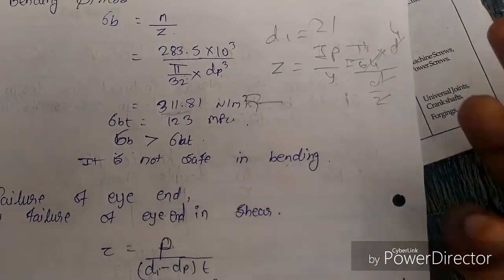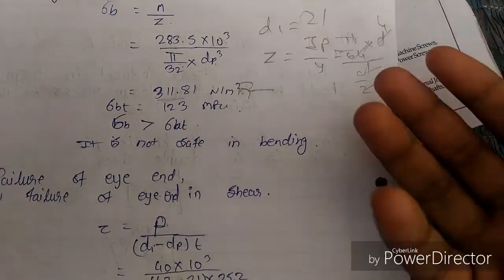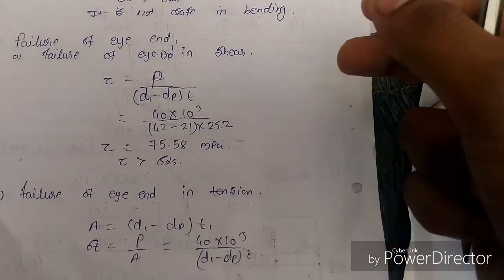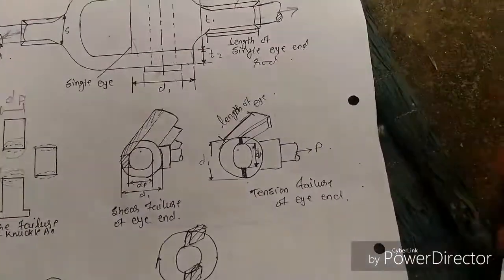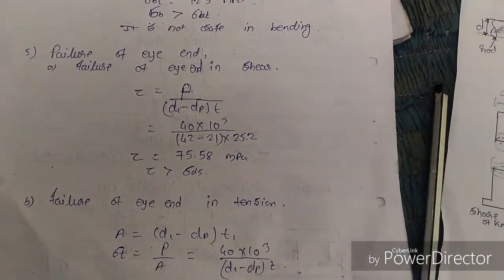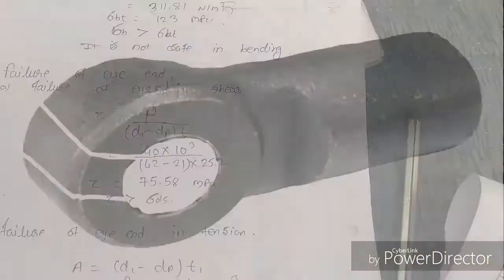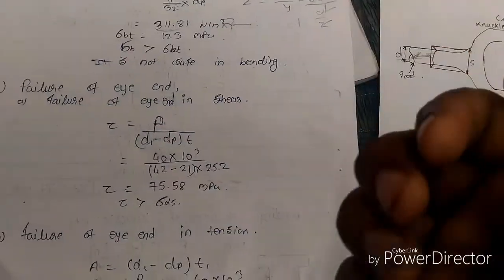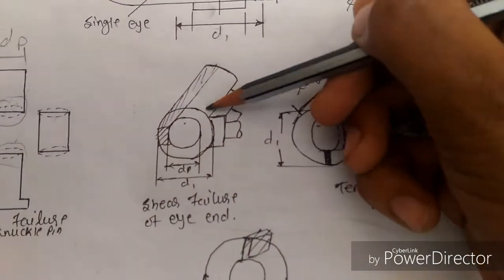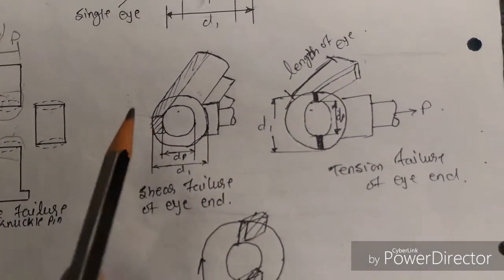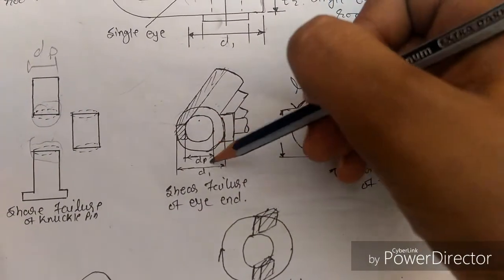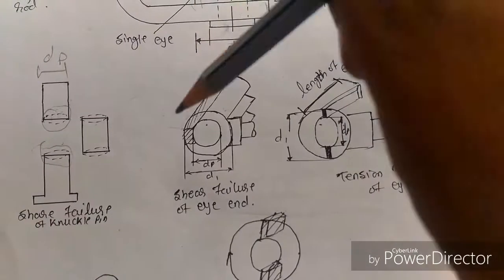Since the pin fails in bending, there are two options: modify the design or note the issue. Next, we check the single eye failure. The single eye can fail in shear — it will shear along the area around the pin hole. We calculate the stress at which it will fail in shear, referencing the diagram showing where failure occurs.